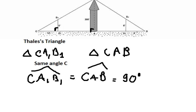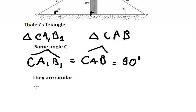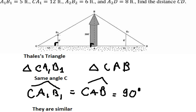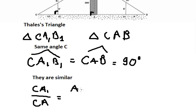So they are similar triangles. In this case we can create the ratio: CA1 over CA equals A1B1 over AB.